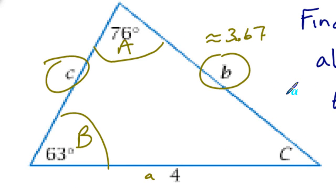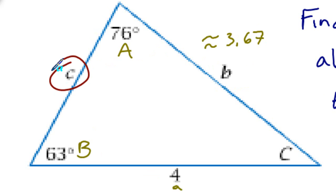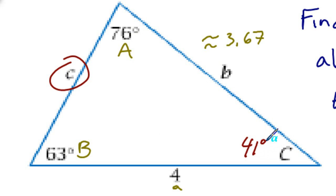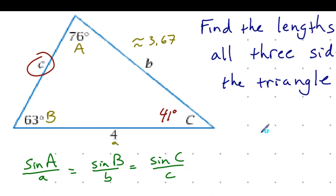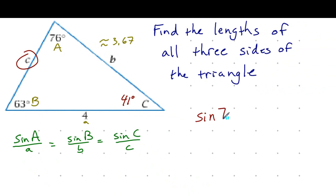Now using a similar approach to find side length C, I first need angle C. With 63 and 76 degrees, adding those and subtracting from 180 gives angle C as exactly 41 degrees. Using the exact given values, I set up: sine of 76 degrees over 4 equals sine of 41 degrees over C.